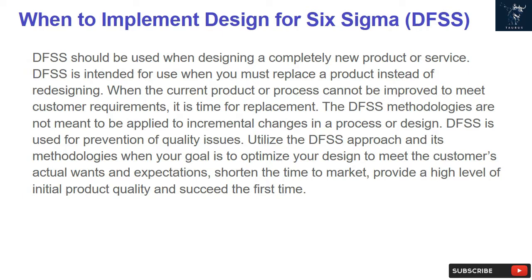When to implement Design for Six Sigma DFSS: DFSS should be used when designing a completely new product or service, or when you must replace a product instead of redesigning it. When the current product or process cannot be improved to meet customer requirements, it is time for replacement. The DFSS methodologies are not meant to be applied to incremental changes in a process or design. DFSS is used for prevention of quality issues. Utilize the DFSS approach when your goal is to optimize your design to meet the customer's actual wants and expectations, shorten the time to market, provide a high level of initial product quality, and succeed the first time.